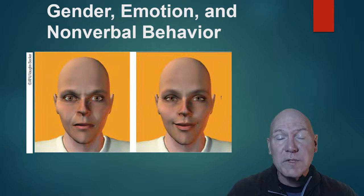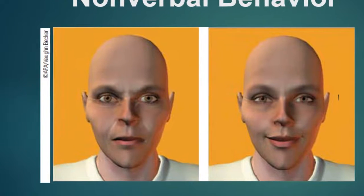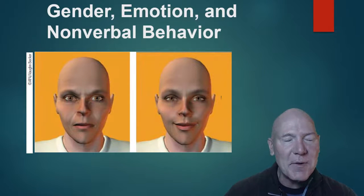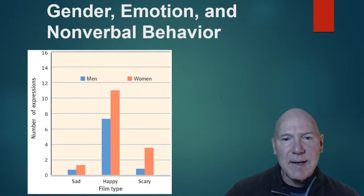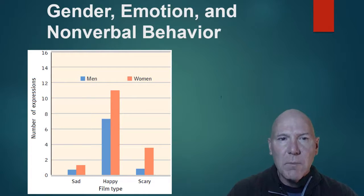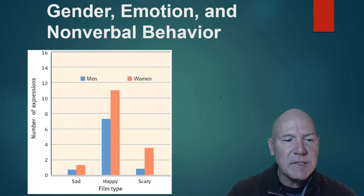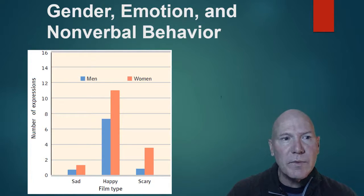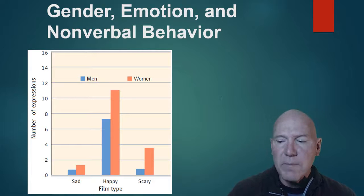There does seem to be a gender difference in emotion. We associate anger more as a male trait while pleasant emotions are associated more with females. When shown the same face with a different expression, more people are likely to say the image on the left is male and the image on the right is female based on the non-verbal expressions. Females also tend to express their emotions more — in studies watching films, women expressed sadness, happiness, and fear more visibly than men.